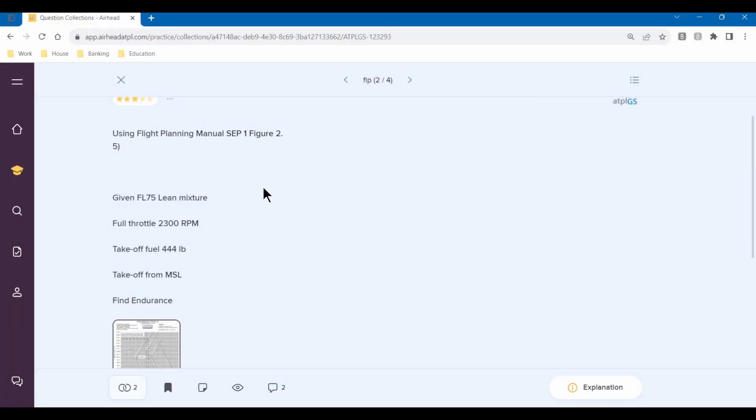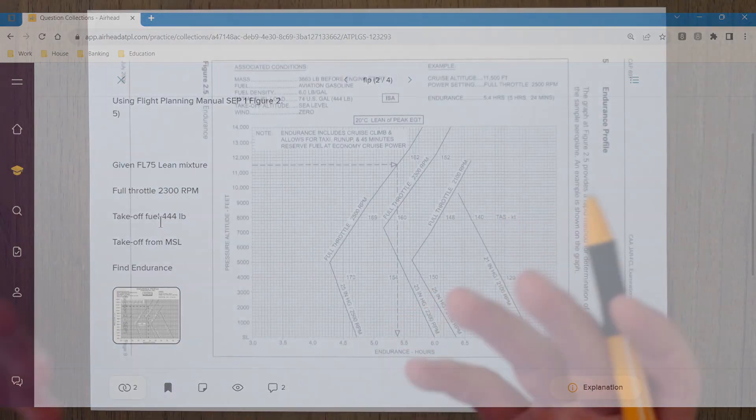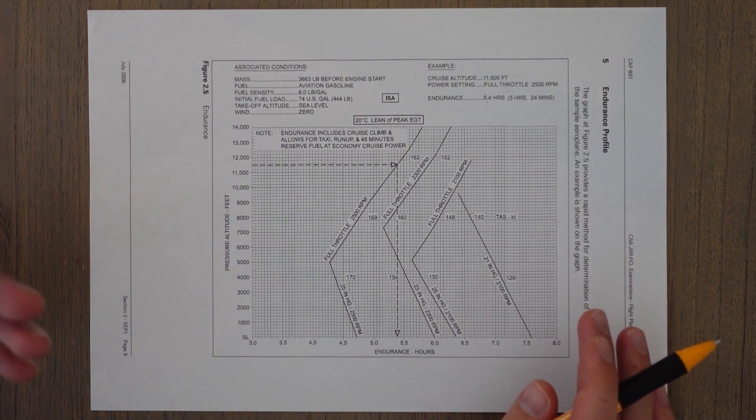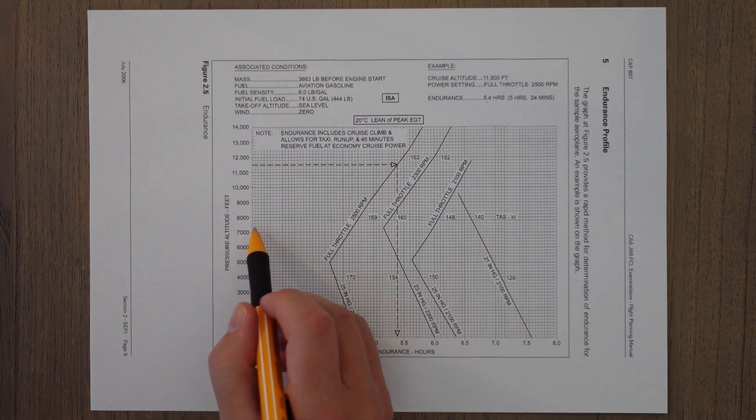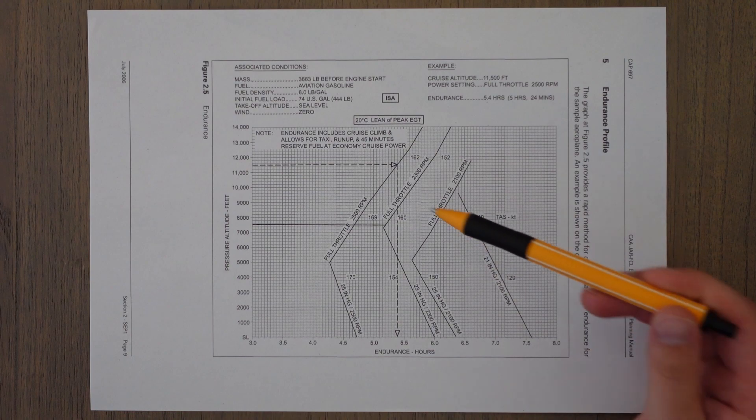In this question we're looking at endurance, and this graph is pretty straightforward. We just go in with the information that is on the question. The question says we've got flight level 075, we've got 2,300 RPM, and then we can find out our endurance from that.